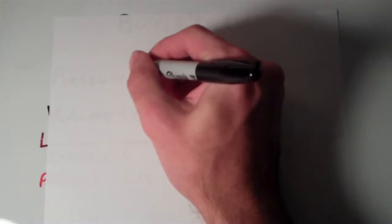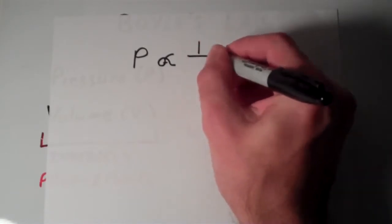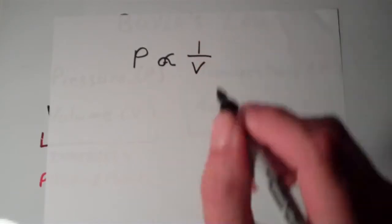So I'm going to write that in this way. I'm going to say that the pressure is proportional to—that's what this sign means, it's pretty poorly drawn—this is supposed to mean pressure is proportional to the inverse of volume, so 1 over the volume.